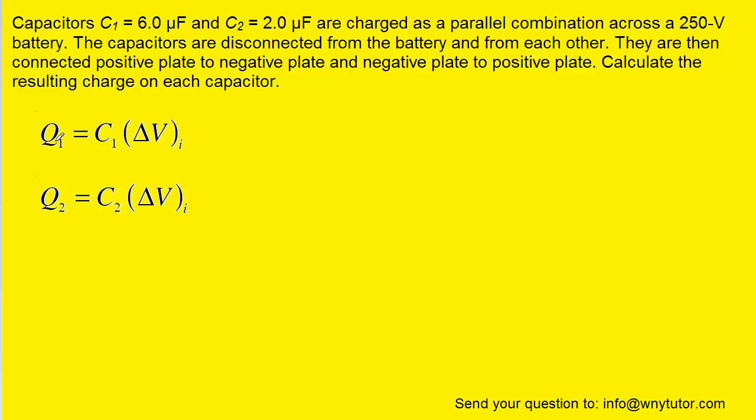Now we know that the amount of charge present on a capacitor is equal to its capacitance times the potential difference between the two plates of the capacitor. The question states the capacitances of both capacitors as well as the potential of the battery, which we can assume to be the potential difference across the plates of the capacitor. So basically all we need to do is plug into this equation and we'll be able to calculate the initial charge on each capacitor.